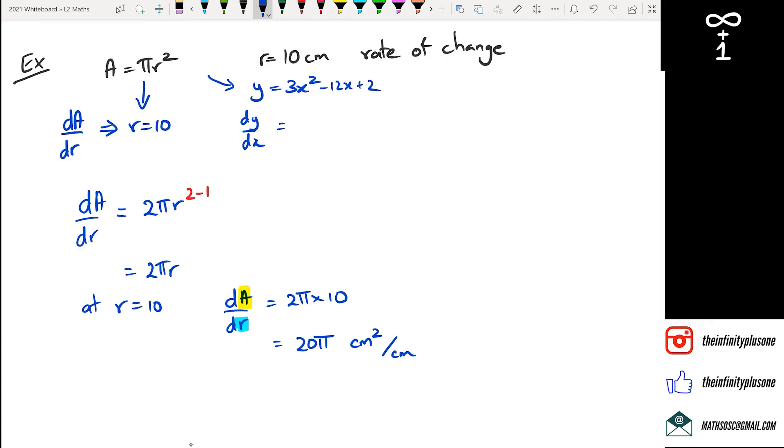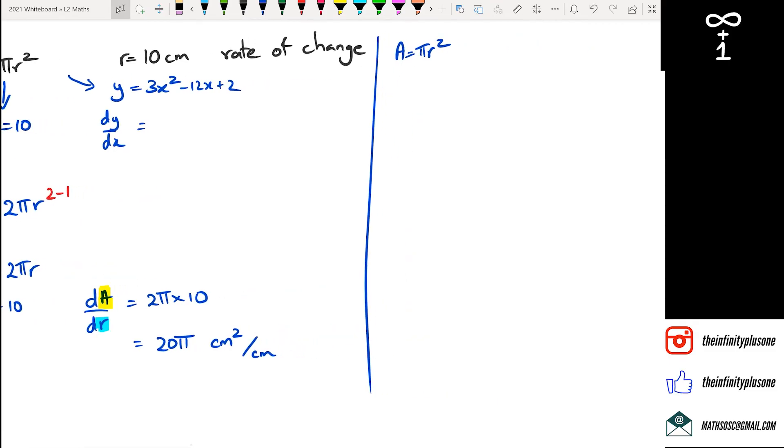Now on the odd occasions, you guys will be given the y value first. Like for example, they could do a question like this where I'm going to stick with that same example of area equals πr squared. They could ask you a question like, what is dA/dr when the area equals, I don't know, 15 centimeters squared. So in this case, what you have to do is you actually have to figure out what r is first.